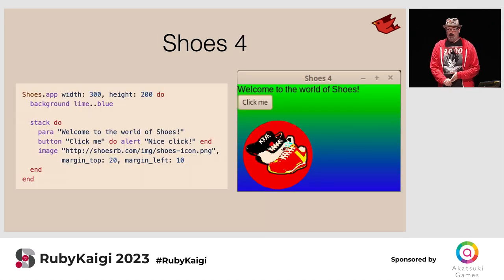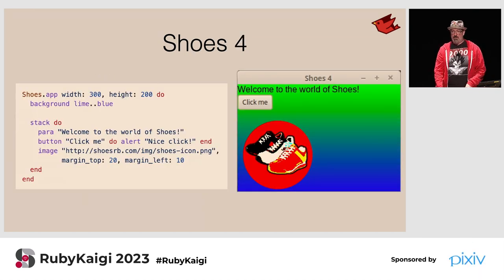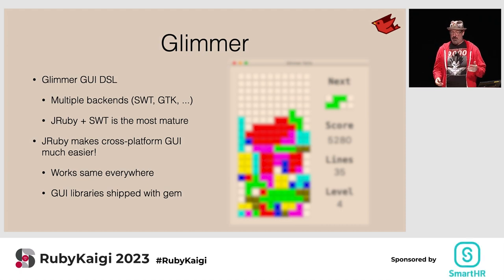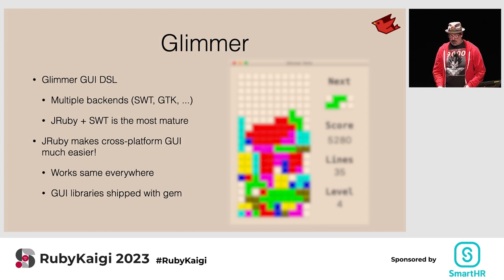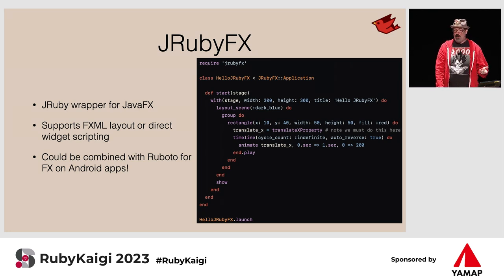There are some other wrappers that make these easier for Rubyists. Shoes 4 is the latest iteration of Why The Lucky Stiff's Shoes library for simple GUIs — I believe it wraps Swing under the covers. Glimmer is a much more feature-rich graphical widget library that wraps several backends like SWT and GTK; it's designed to be really nice for Ruby users and makes it easy to build cross-platform applications. And here's a bit of JRubyFX code — we build up our scene in different layers and run it through the JavaFX runtime.